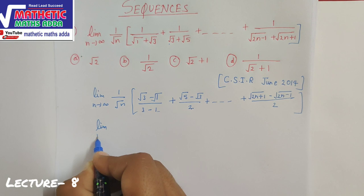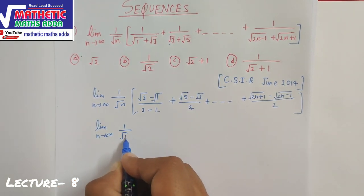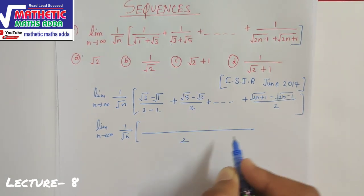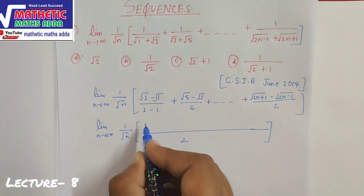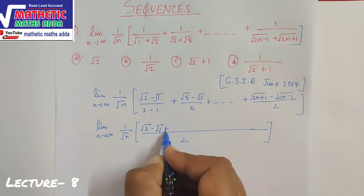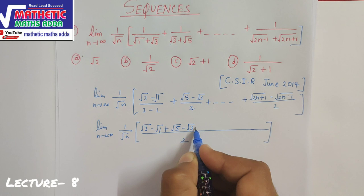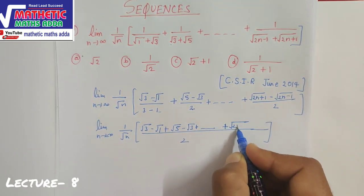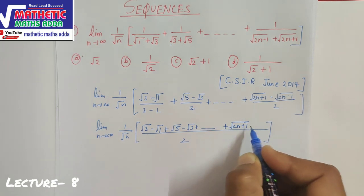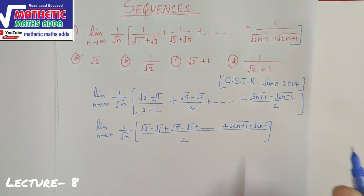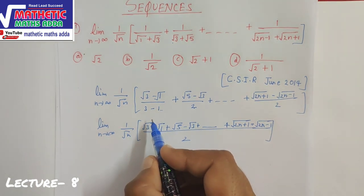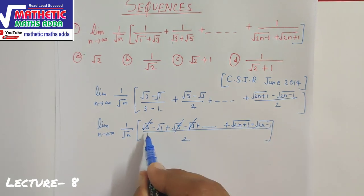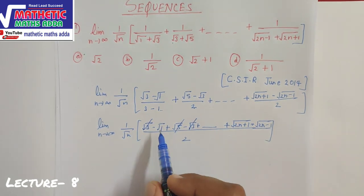So the limit is n tends to infinity of (1/√n) times (1/2) times [√3 − √1 + √5 − √3 + ... + √(2n+1) − √(2n−1)]. Notice that √3 cancels, √5 cancels — all intermediate terms cancel in this telescoping series.